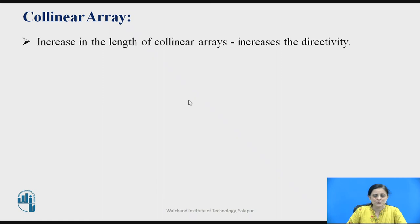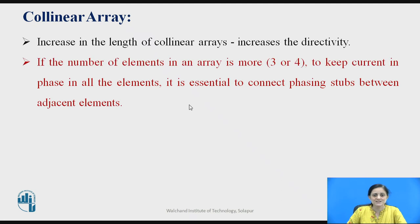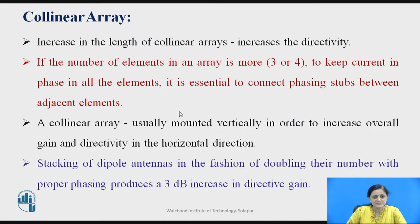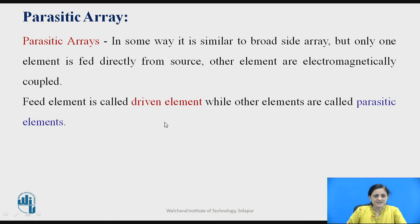As the length of the collinear array is increased, the directivity of the antenna array is also increased. If the number of array elements is more than two, it is essential to connect phasing stubs between adjacent elements to keep the current in phase. A collinear array is usually mounted vertically to increase overall gain and directivity in the horizontal direction. Stacking dipole antennas and doubling their number with proper phasing produces a 3 dB increase in directive gain.